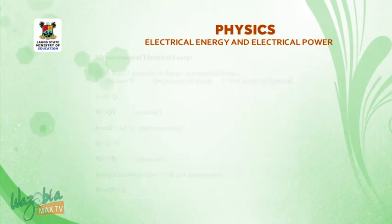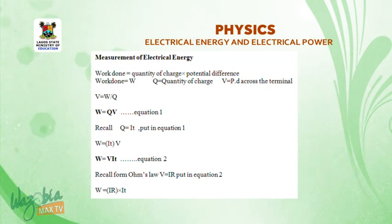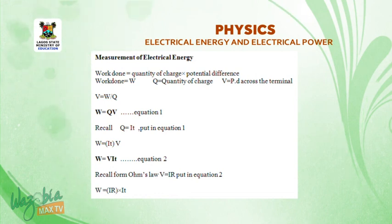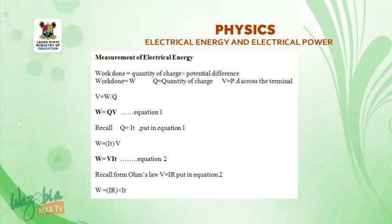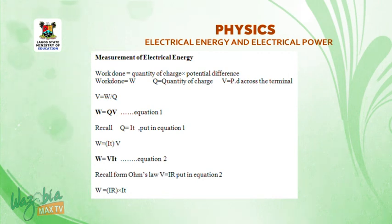Measurement of electrical energy: work done equals quantity of charge times potential difference — W = QV, where W is work done, Q is quantity of charge, and V is potential difference. Since Q equals current times time (Q = It), substituting gives us electrical energy W = VIt.